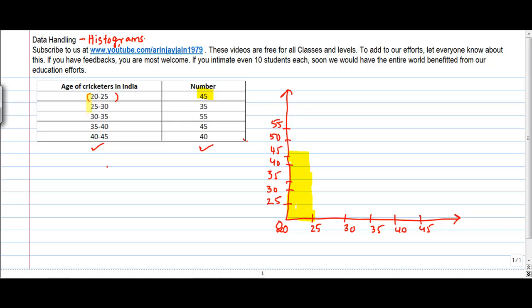Now the second one which basically I have is 25 to 30 which is this portion and the frequency is 35 so 35 comes here